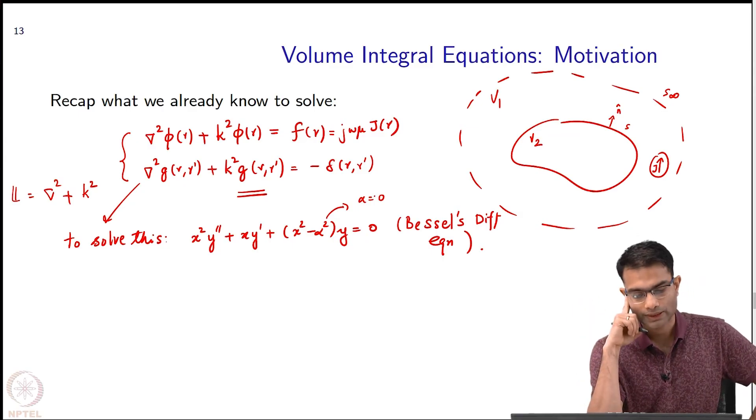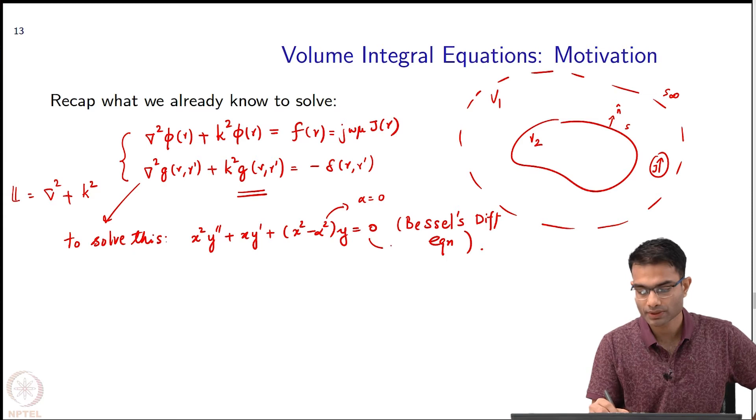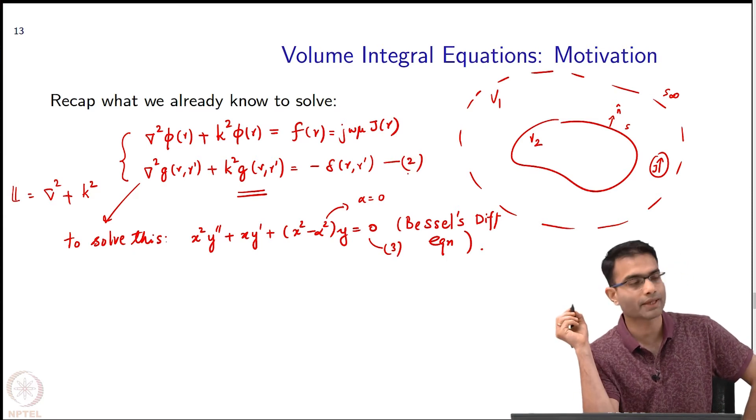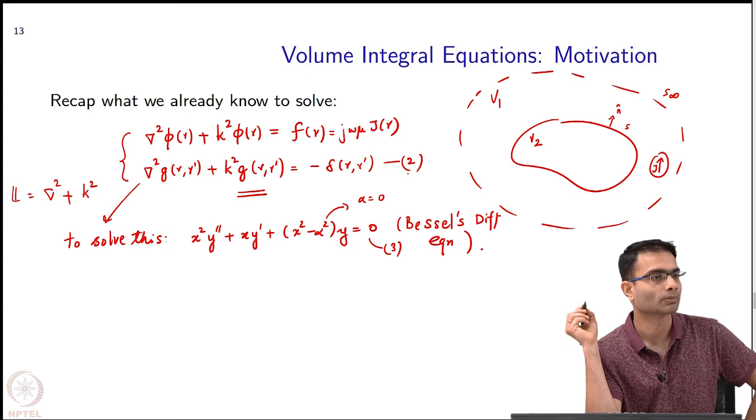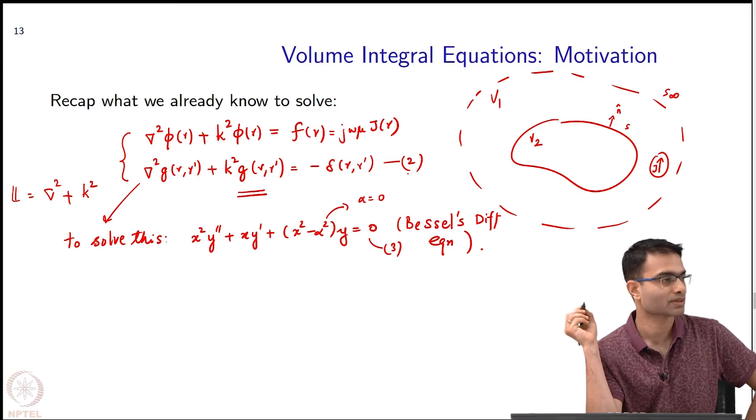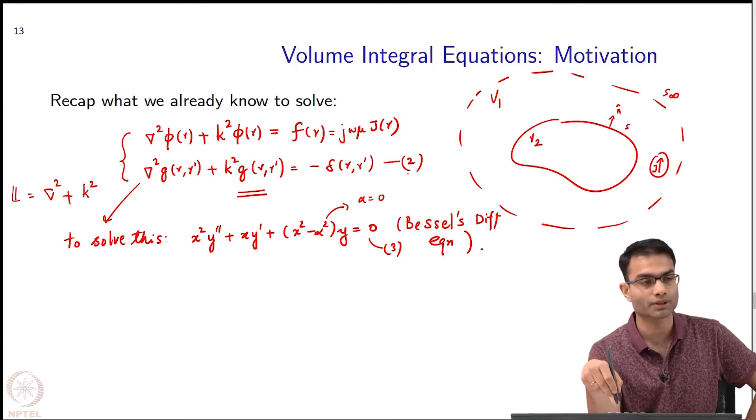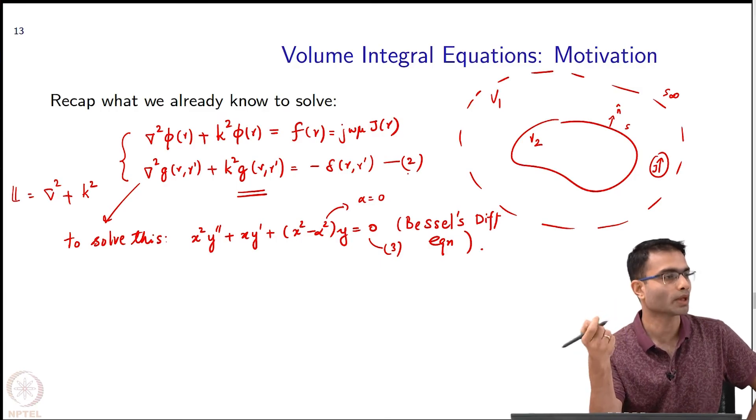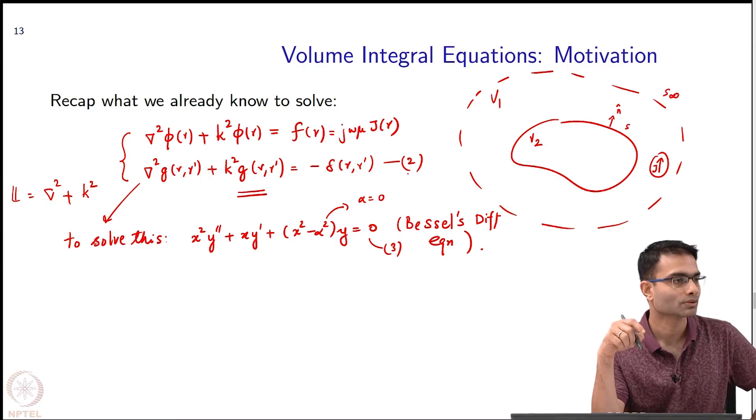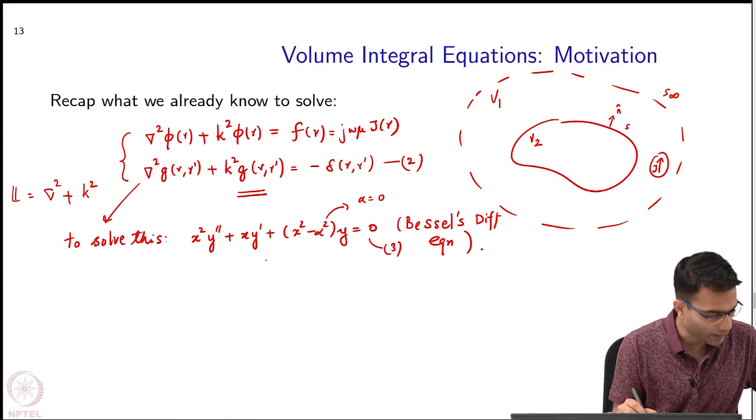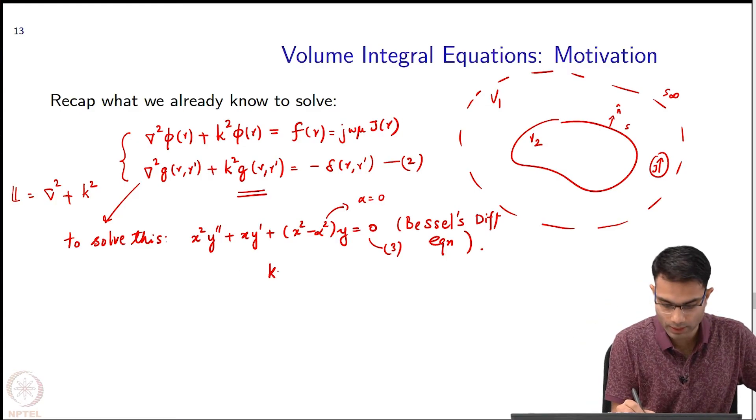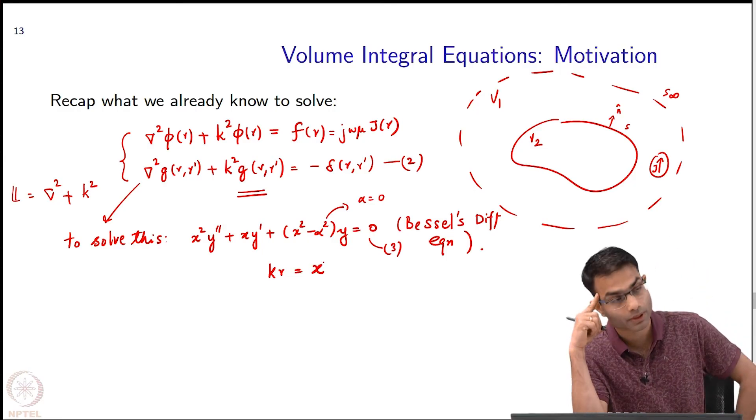Now, this equation over here, let us call this equation 3. Equation 3 did not have any k term over here. There is only x y and alpha which is 0, but our original equation 2 had a k. We had to do one more manipulation and that was x equal to k r.